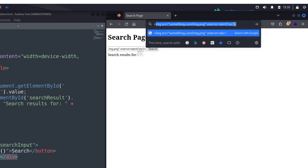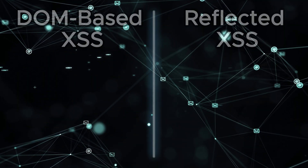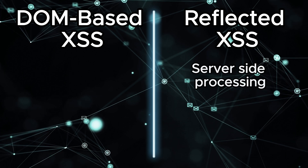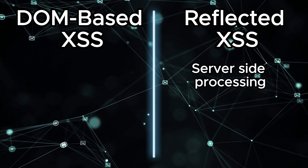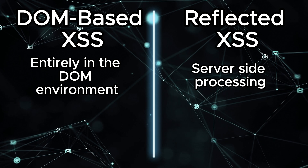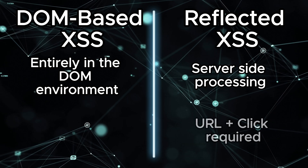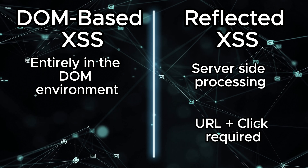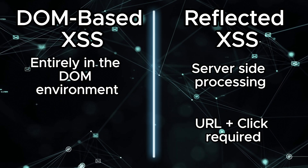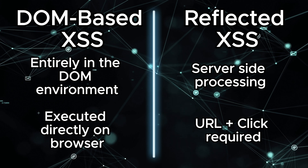You may be confused because this looks similar to a reflected XSS, but it's not really the case. In a reflected XSS, an attacker crafts a malicious URL containing a script, which when clicked by the victim sends the payload to the server, where it is reflected back in the response and executed in the victim's browser. But in a DOM-based XSS, the payload is executed directly within the victim's browser when the manipulated script is executed, without involving server-side processing.